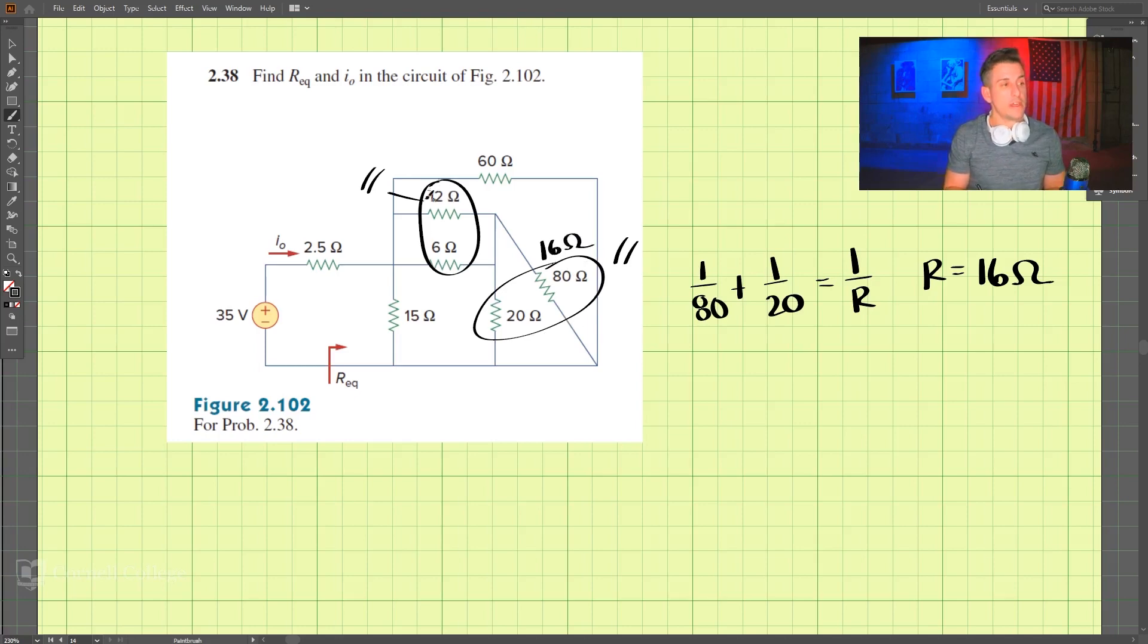Now for these two, we do the same thing. These are in parallel. So we have 1 over 12 plus 1 over 6 is equal to 1 over R. The 1 over 12 plus 1 over 6, and that comes out R is equal to 4 ohms. So that is 4 ohms.